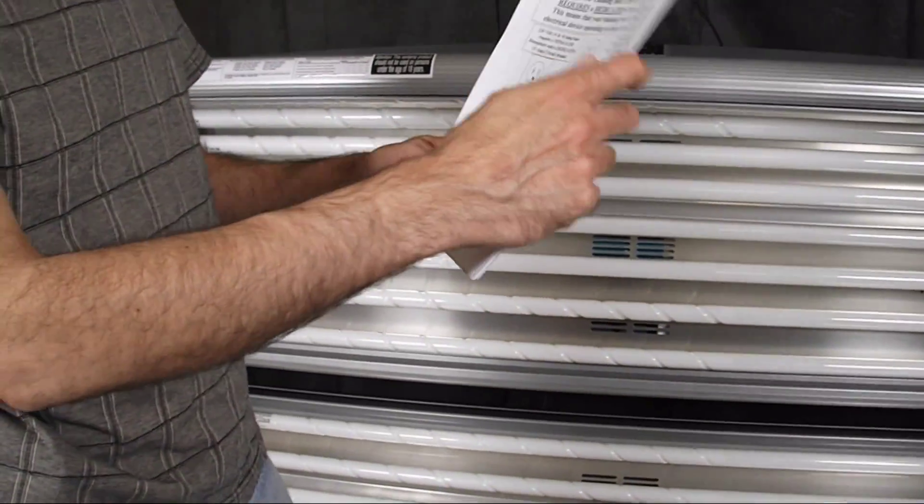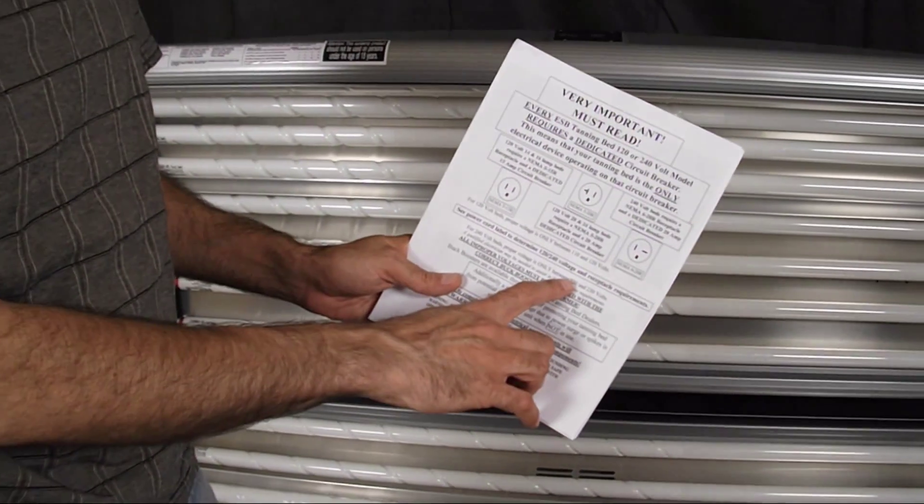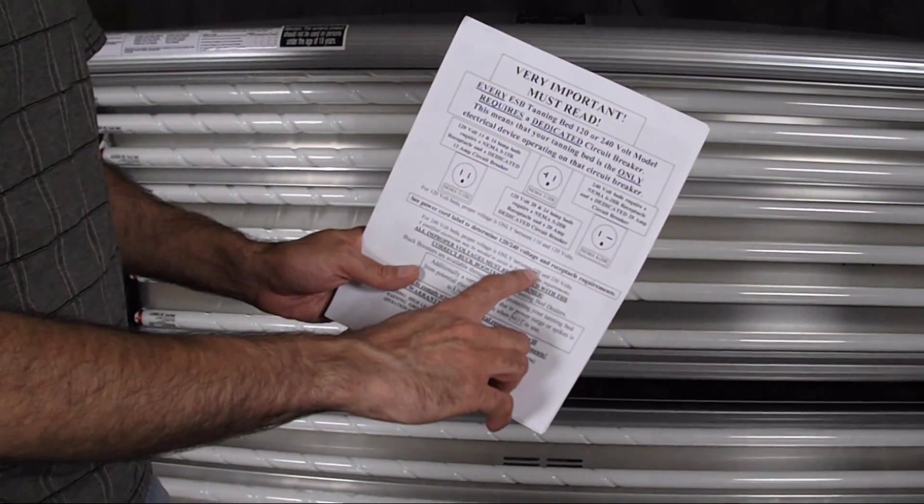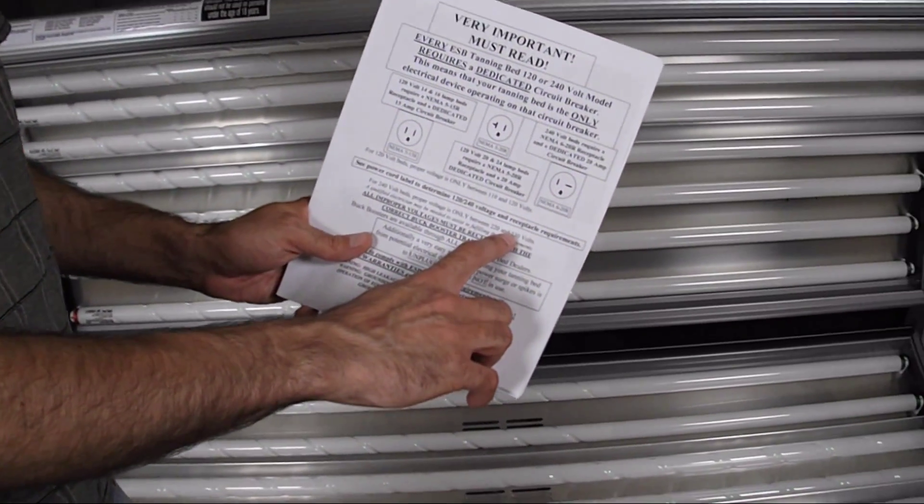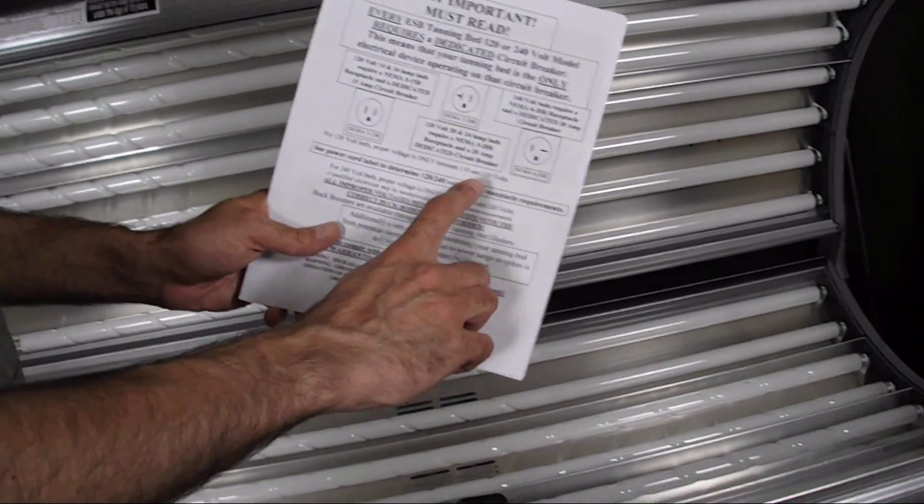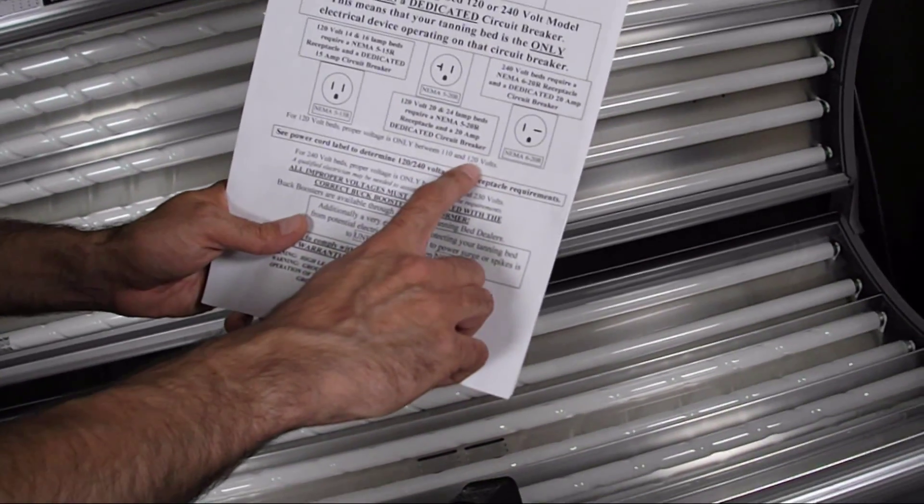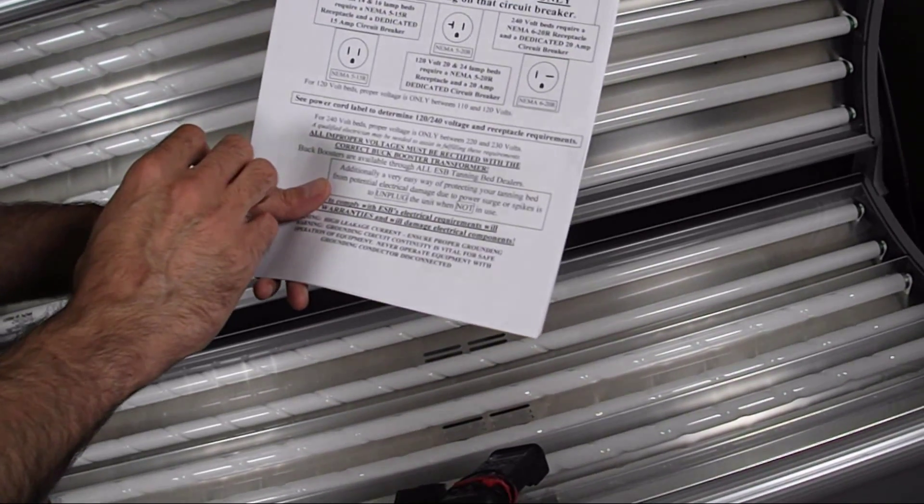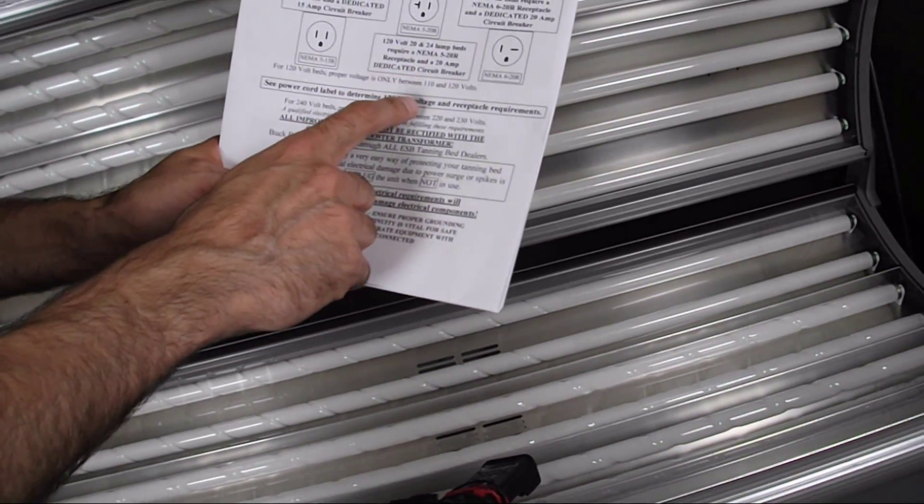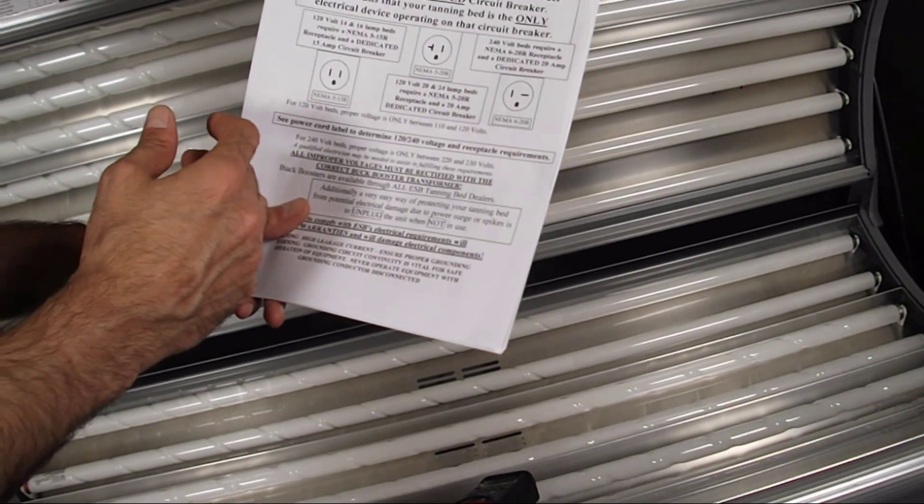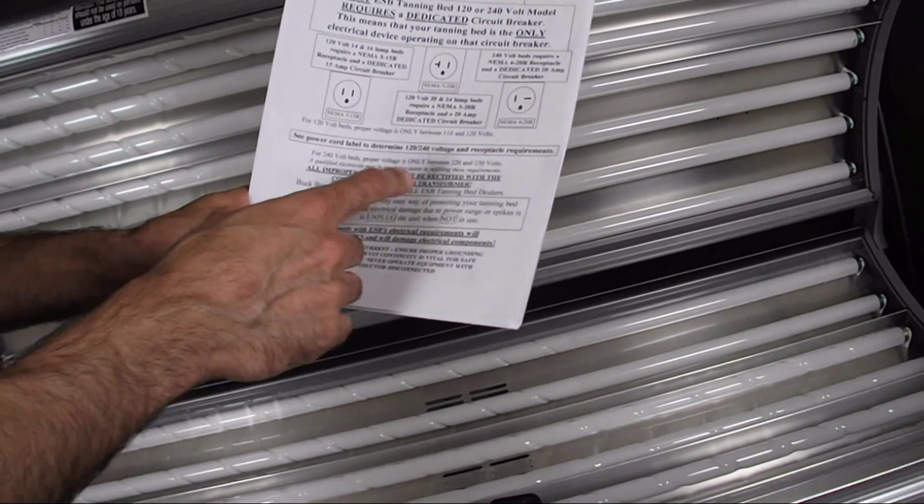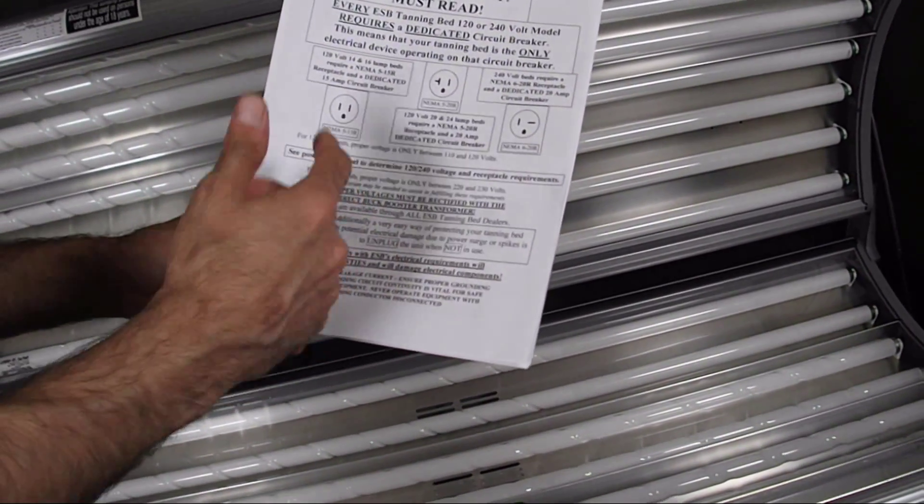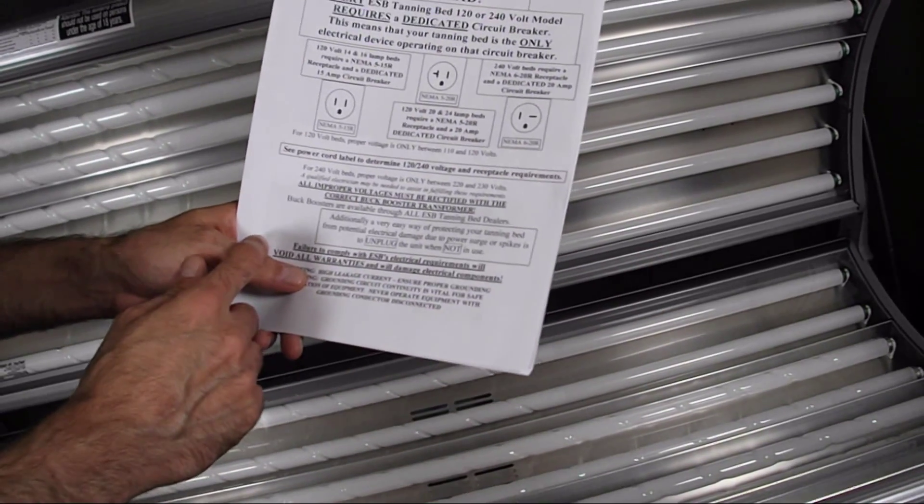A lot of the older beds, especially, would specify only 220 to 230 on the 240 volt side. So you may look into getting a buck booster transformer or something to rectify if you have voltage that is outside of that range.